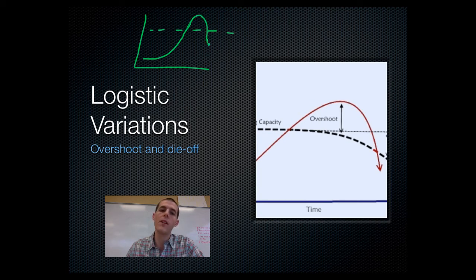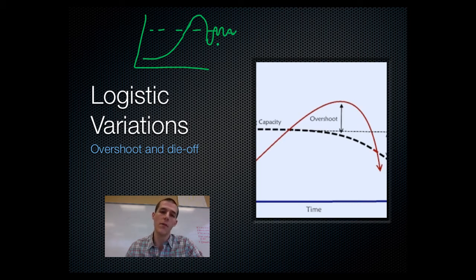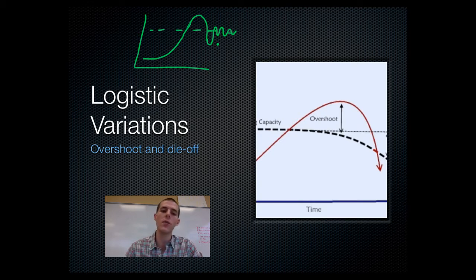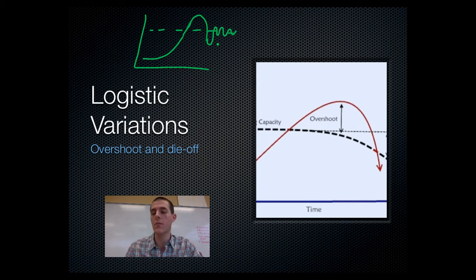Then it rebounds. From there on out, it's just going to bounce back and forth right along the carrying capacity: it will overshoot, and then because there's not enough resources, it will die off and grow back and die off and grow back. Know that that is overshoot and die-off — it's basically what keeps a population near the carrying capacity, and this is more of what we see in the real world.